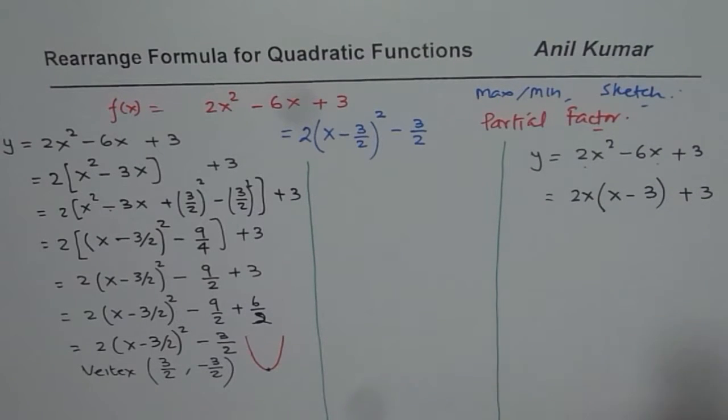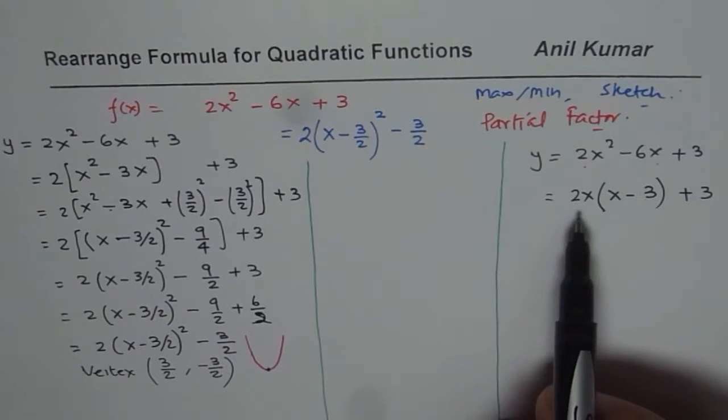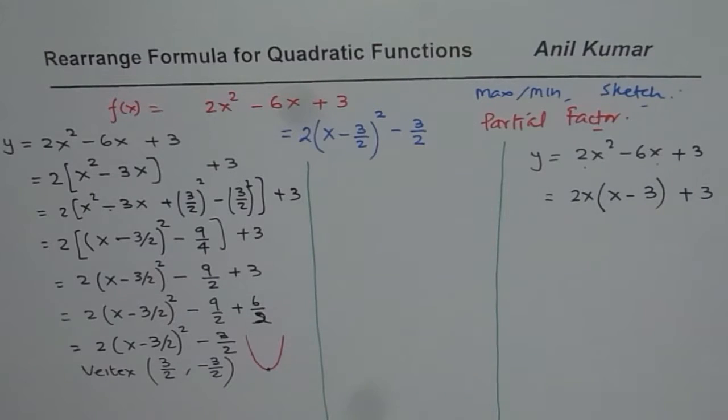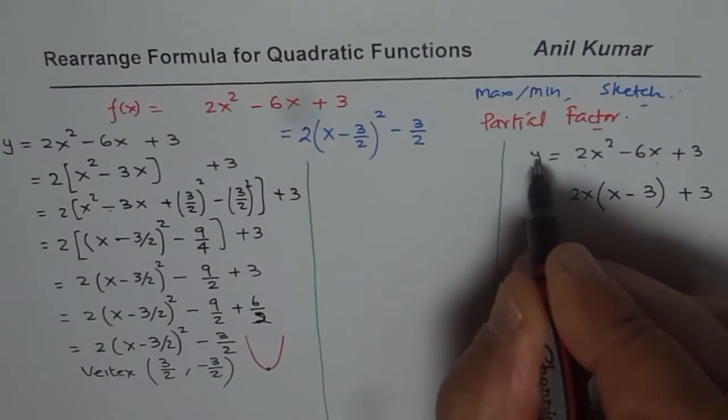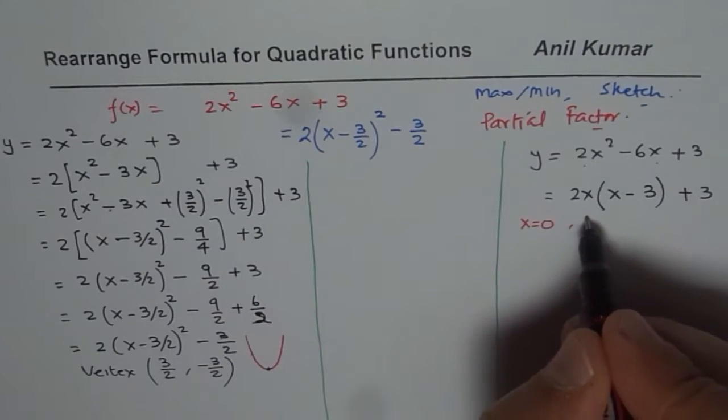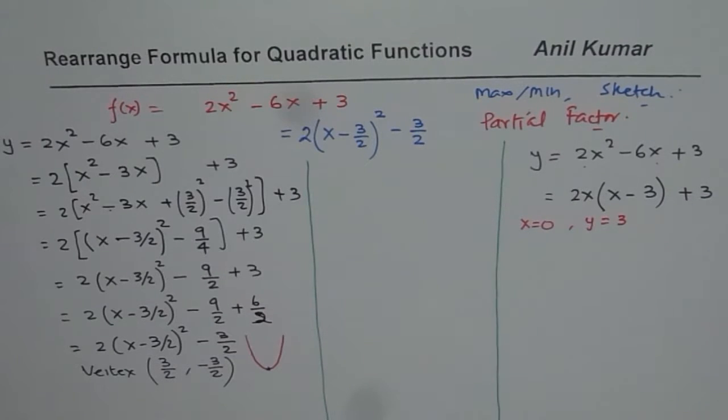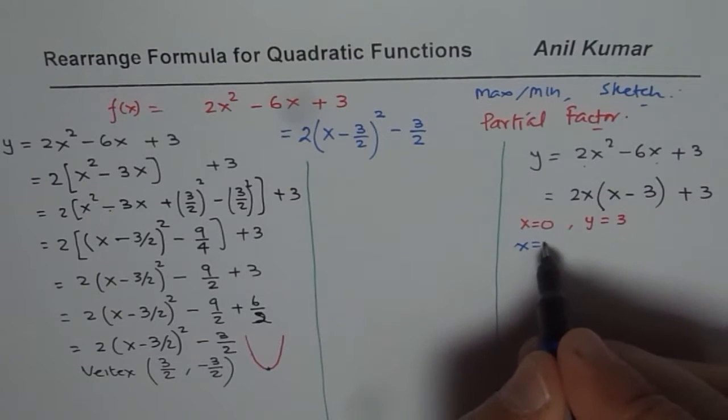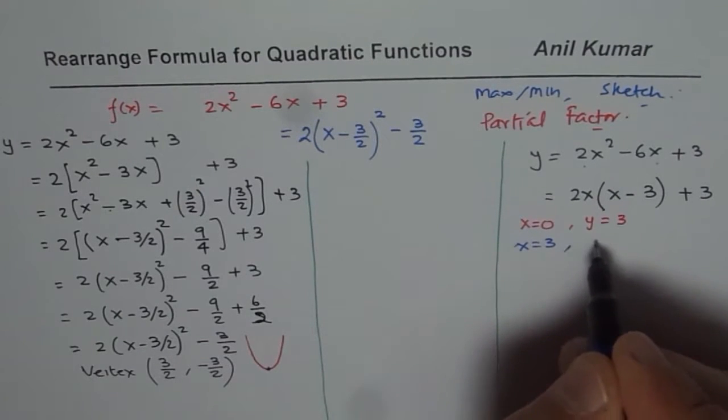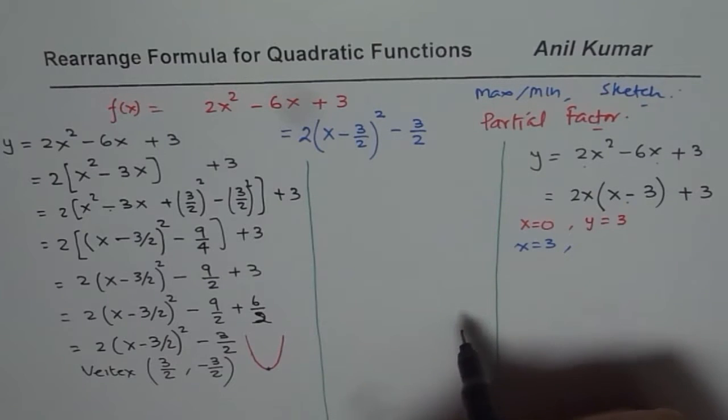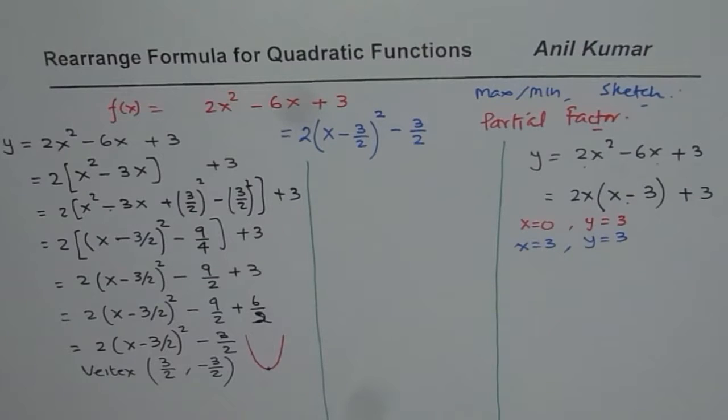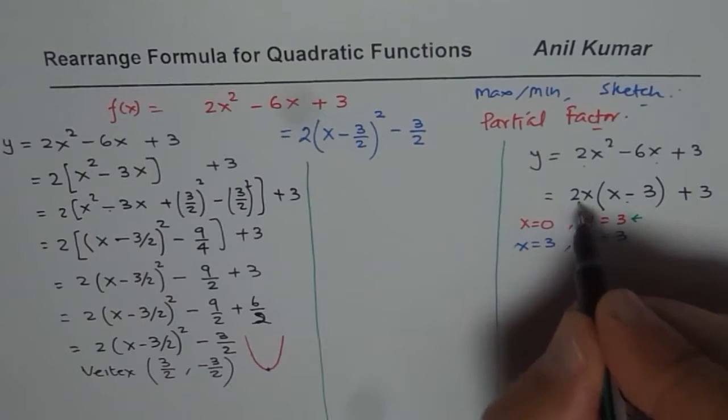Now, what do you notice? What is the y-intercept? Y-intercept is when x is 0. So if x is 0, then I get y equals to 3. Now, how about if I write x equals to 3? If I write x equals to 3, even then, this factor is 0. 0 times anything is 0. So I get y equals to 3.